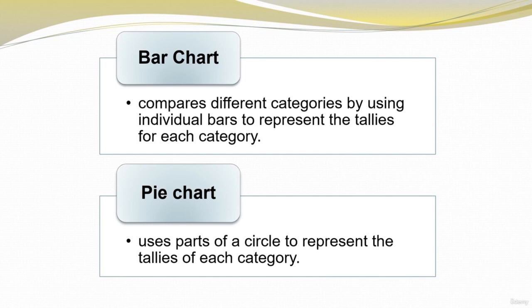We finish this module with the bar chart and the pie chart. The bar chart compares different categories using individual bars to represent tallies for each category, while the pie chart uses parts of a circle to represent the tallies of each category. Thank you for your attention — I hope this was an educational module and you learned something about visualizing data.